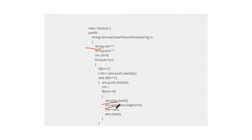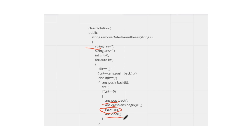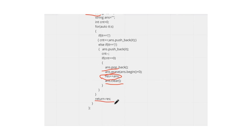We store the valid parenthesis substring in a string called answer. When counter becomes zero, we remove the first and last elements — this removes the outermost parentheses. Then we push the remaining part into our result. After that, we clear our answer string so we can store the next valid substring from the next pointer. Finally, we return our result.